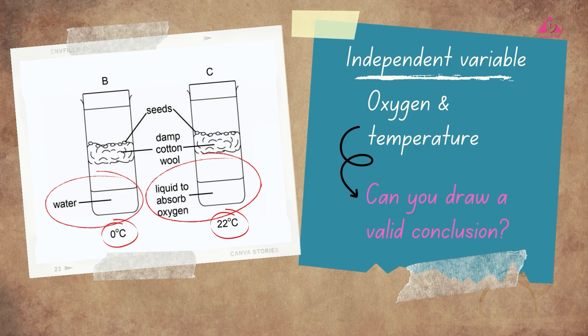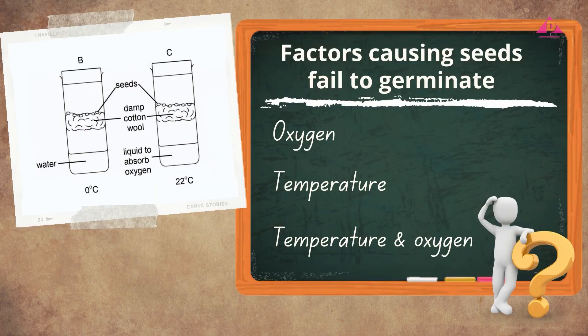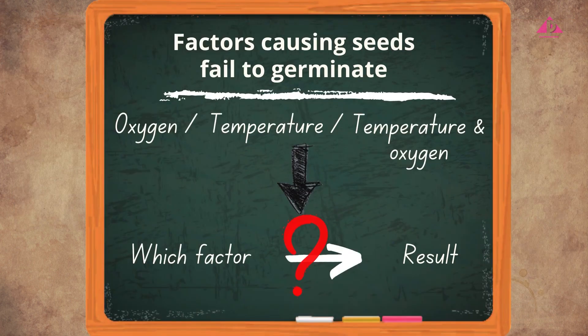Can we draw a valid conclusion if the investigation involves more than one factor affecting the dependent variable? Assuming the seeds fail to germinate, there would be three possible explanations: oxygen, temperature, or both temperature and oxygen. Since there is more than one factor that affects the results, we cannot draw a valid conclusion because we cannot tell which factor caused the result. Hence, we cannot get any useful information by comparing setups B and C.